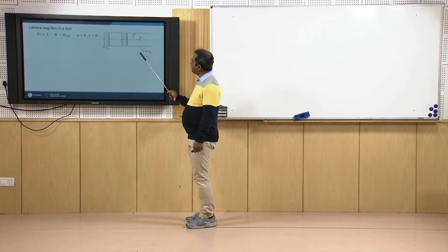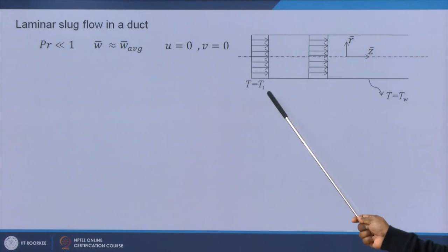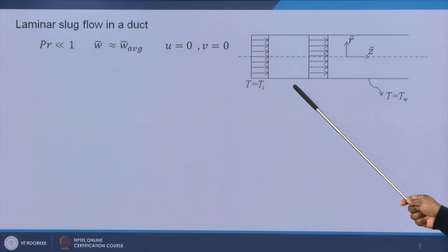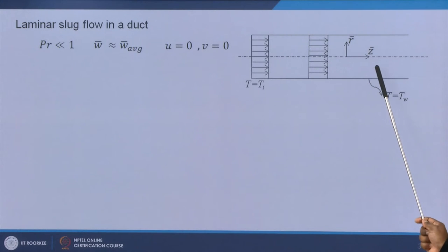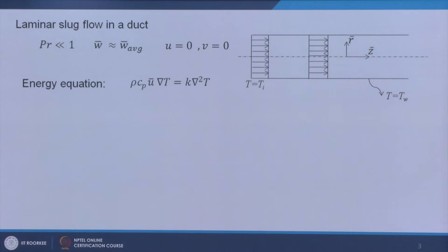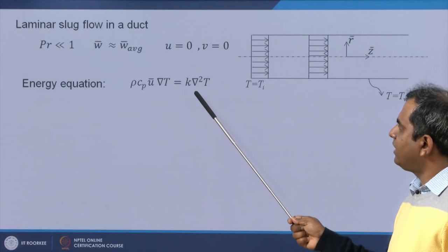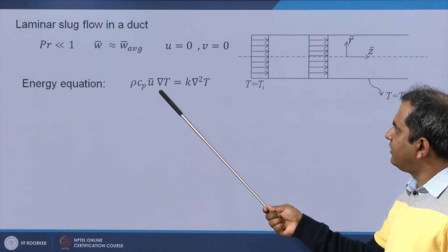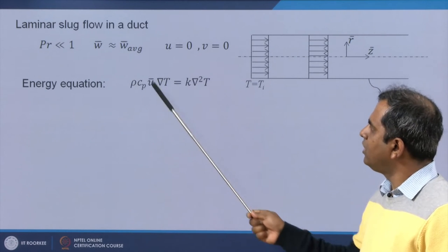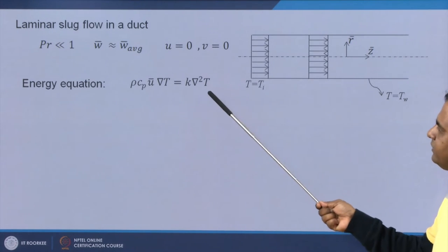Schematically, we have flow entering at constant velocity with constant temperature T_i. The tube wall is kept at constant temperature T_w. Radial and axial coordinates are shown as R-bar and Z-bar. The energy equation reduces to: convection on the left-hand side equals conduction on the right-hand side — rho·C_p·U-bar·del T equals K·del²T, where U-bar has three components U, V, and W.